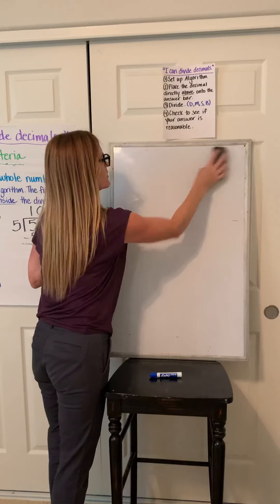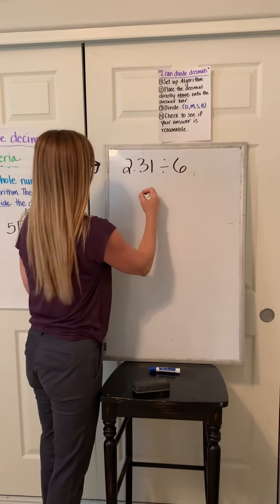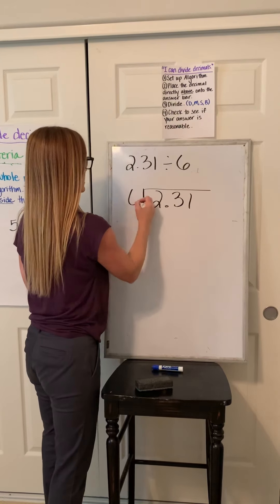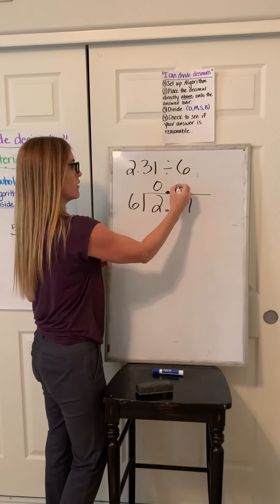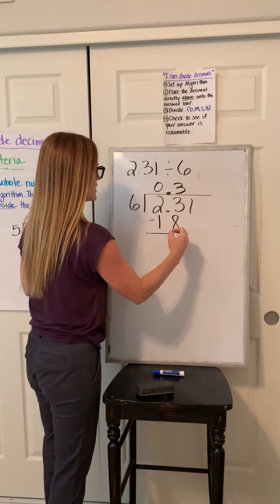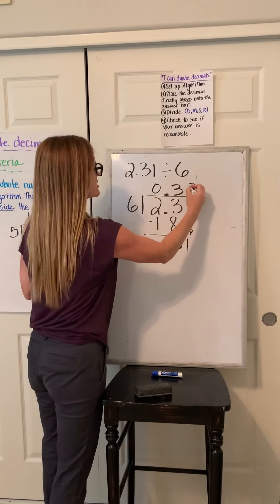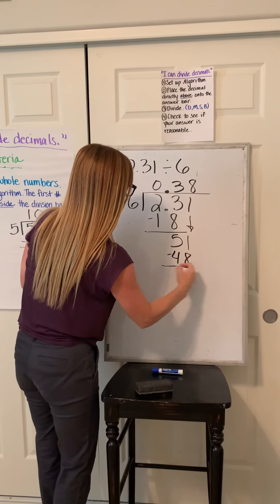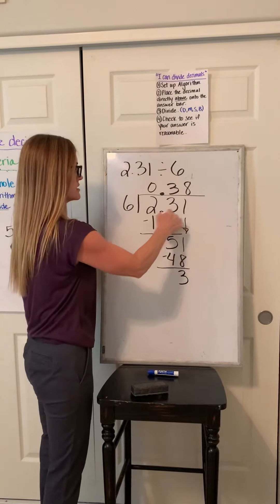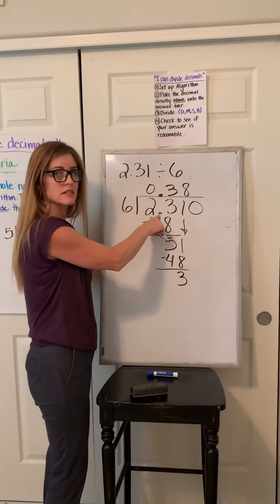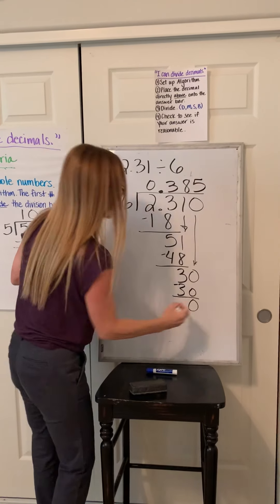Let's try another one where we have to add a zero: 2.31 divided by 6. Set that decimal up. 6 won't go into 2, but 6 will go into 23 about 3 times. 3 times 6 is 18. Subtract — I have 5 remaining. Bring down that 1. 6 into 51 about 8 times. 8 times 6 is 48. Subtract — I have 3 left over. So I have a remainder and everyone's had a turn. Let's see if adding a zero works — that does not change the value of the problem, and I'm allowed to do that because it's a decimal. 6 into 30 goes 5 whole times, and I can get rid of my remainder.